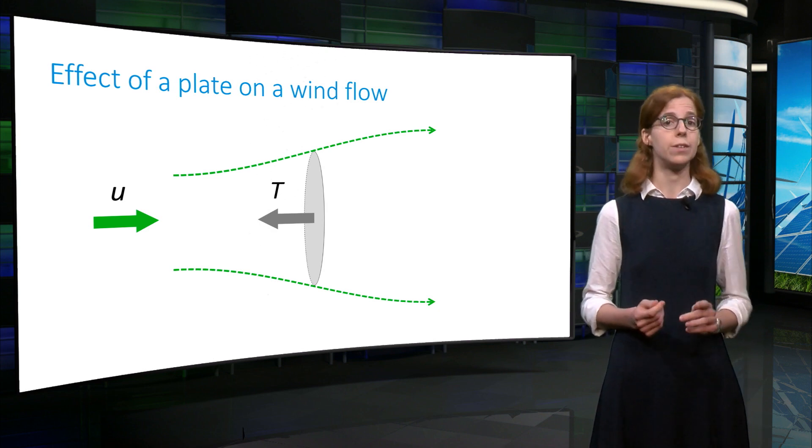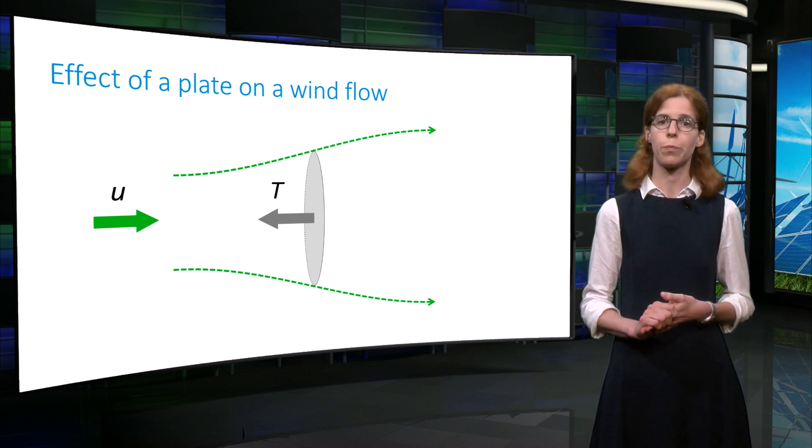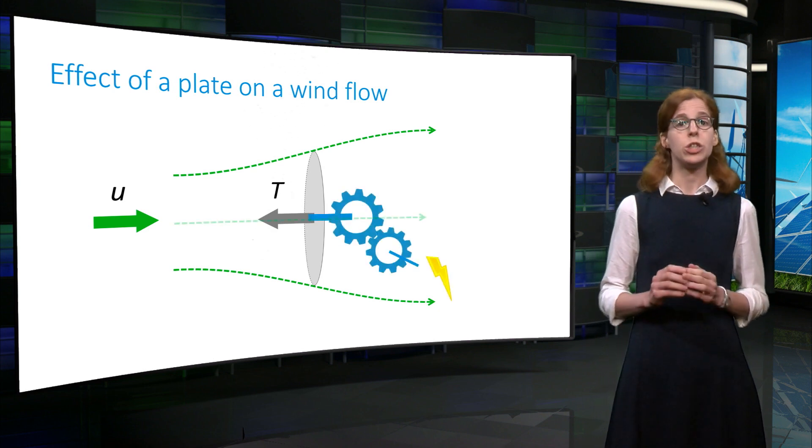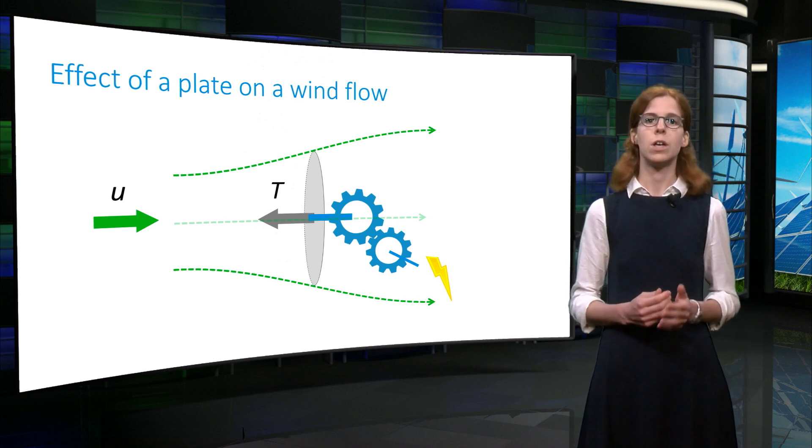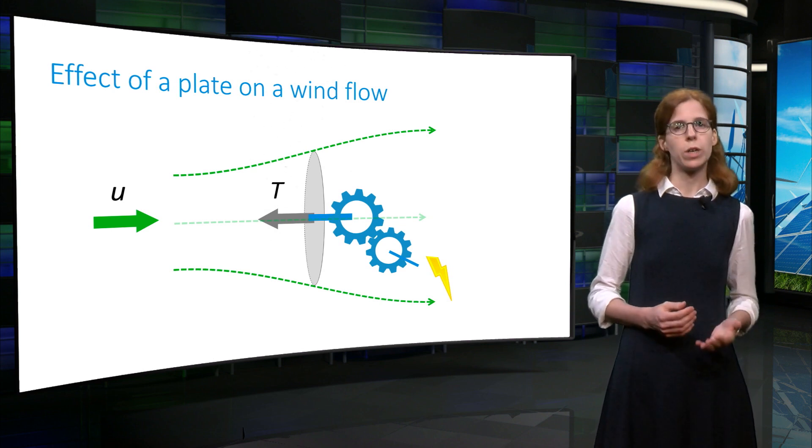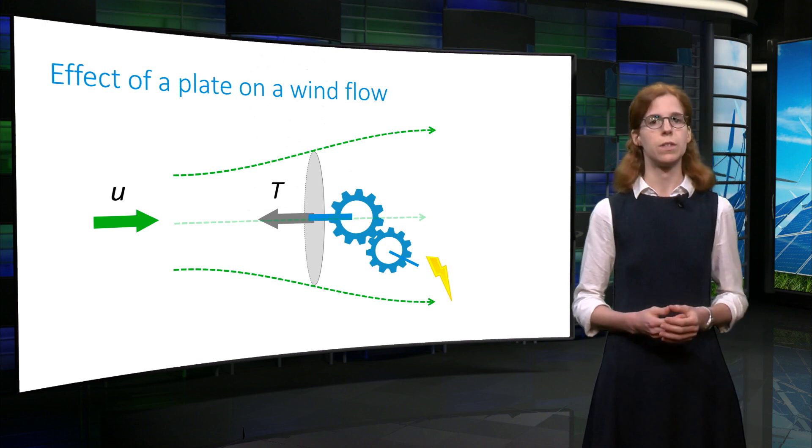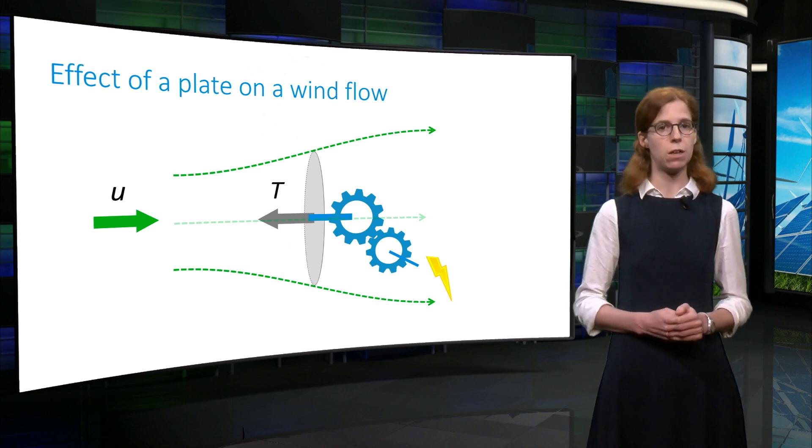The latter implies that the disk should not block completely the flow. Instead, it should allow for some flow to go through the disk. In other words, the disk should be porous. We will see shortly that this has some consequences on the number of blades and also the rotational speed of the rotor.